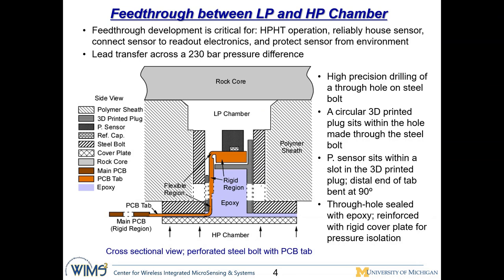This slide shows our feedthrough between the LP and the HP chamber. This is a critical design because it has to cross a 230 bar pressure difference, provide a good seal, allow the sensor to connect to the readout circuits electronically, and orient the sensor at the right angle to measure the pressure in the low-pressure chamber. The lateral tab of the flexible PCB is bent and mounted onto a 3D-printed plug, which goes into a steel bolt mounted on the polymer sheets. This 3D plug orients the tip of the flexible PCB tab so that the sensor diaphragm is facing the low-pressure chamber. The inside of the 3D-printed plug is filled with epoxy for sealing, and finally a rigid cover plate is applied on the high-pressure chamber side to isolate the high pressure.